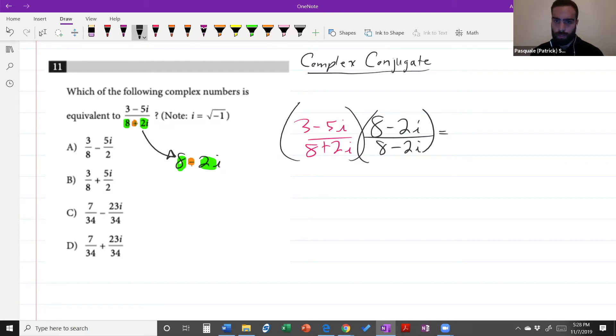You just need to distribute on top, multiply it, you could FOIL it out. So first times first, 24, outer times outer, inner times inner, last times last.